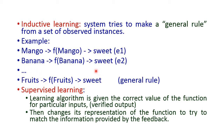By using all these results I can generate my rule: 'all fruits are sweet.' This is my general rule. In supervised learning, the learning algorithm is given the correct values of the function — initially we give only correct, verified inputs. Then we change the representation of the function to match information provided by feedback. We give different inputs to the same function, record the output, and verify it using the feedback, which is the verified output already recorded in our system. This is called supervised learning.